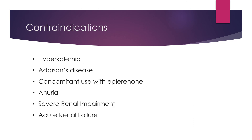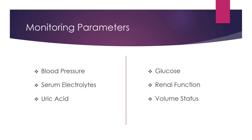There are a few contraindications when it comes to taking spironolactone, which include hyperkalemia, Addison's disease or chronic adrenal insufficiency, concomitant use with eplerenone, anuria, severe renal impairment, and acute renal failure. As for monitoring parameters, be sure to get blood pressure readings, serum electrolyte levels, uric acid, glucose levels, renal function, and volume status.